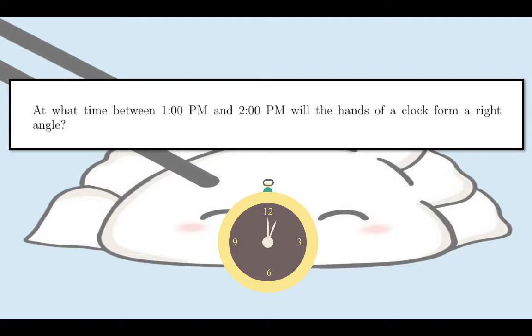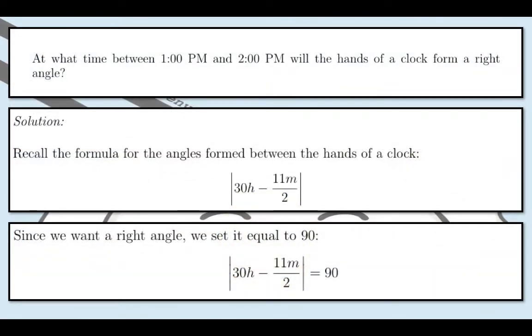Now let's dive in with the solution. So recall the formula formed between the hands of a clock. We have the absolute value of 30h minus 11m over 2. H is the hour, so if you have a time like 3:45, h would have a value of 3 and then m would have a value of 45. Since we want to have a right angle, we set it equal to 90.